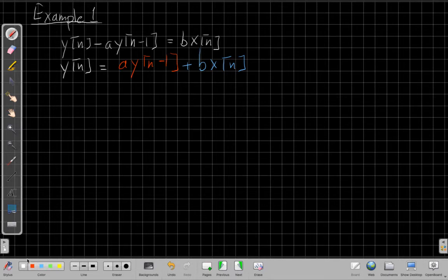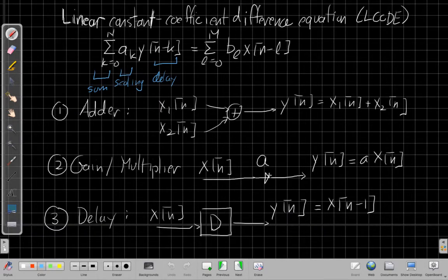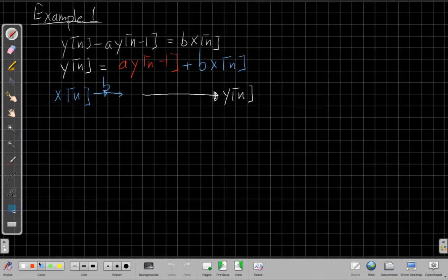And so if I want to make a block diagram, I usually start by having x of n on one side and y of n on the other, and then I sort of need to fill in the map in between them, so how I get from one to the other. So we say, well, I need two things here. I need to take the current value of the input and scale it by b. So this is my gain of b, like we saw on the previous page. Here's my gain system, scale by b.